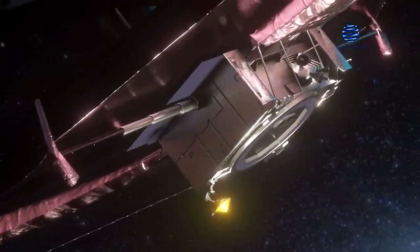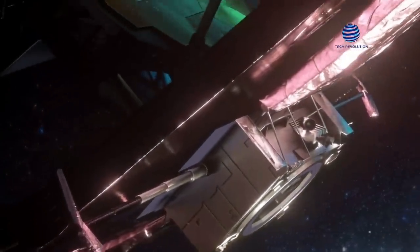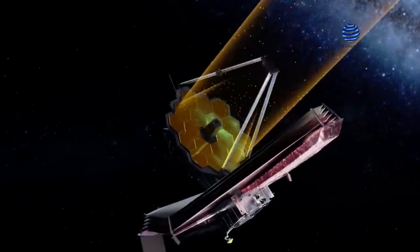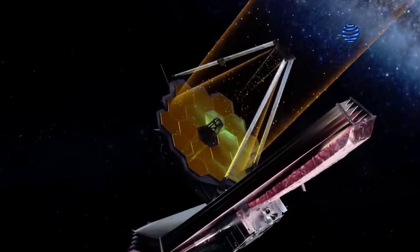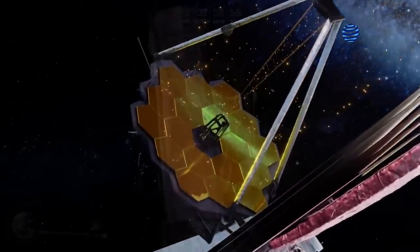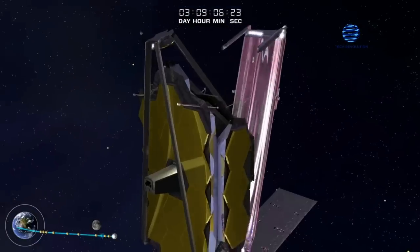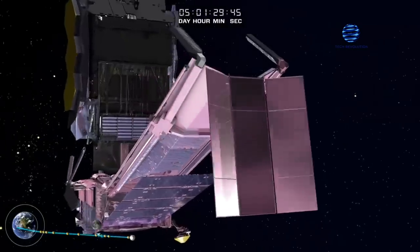Webb's first three weeks in space were spent deploying its solar array and high-speed antenna, as well as its secondary mirror, six of the primary mirror's 18 segments that were folded away for launch, and extending a tennis court-sized sunshade to block out the sun, earth, and moon's light and heat.